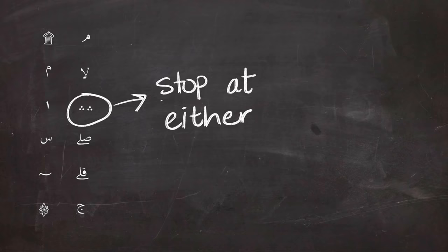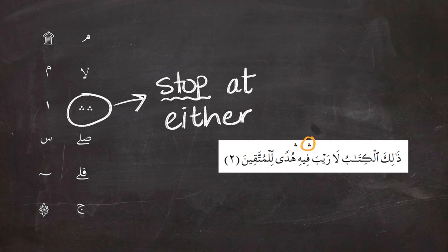The three-dotted symbol means you can't stop at either of them, but you have to stop at one and not the other. So in the second ayah of Surah Al-Baqarah, you are allowed to stop at the first one by reading, or by stopping at the second one.